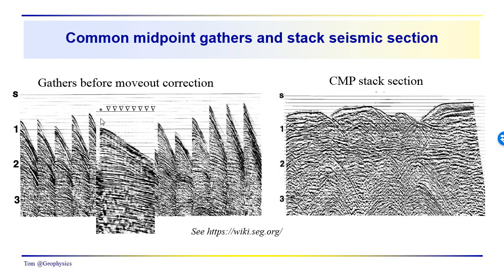With that background, we can take a look at some real data. The real data does get quite noisy and complicated. We can see a nice reflection event in here. We do velocity analysis, flatten out the reflections throughout the gather, and sum all the traces together. It could be any number of traces — 12, 24, 48, and so on. There's a large number of traces, all summed together, and we get a single trace from each of these gathers after NMO correction and stacking.